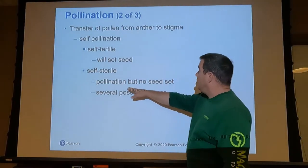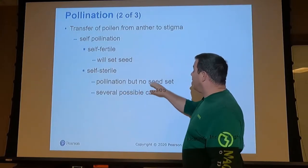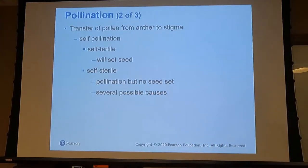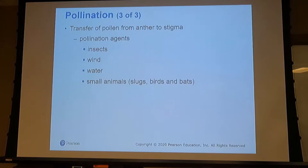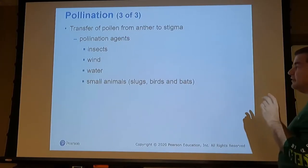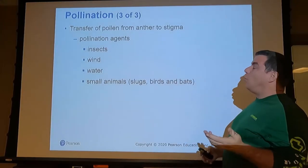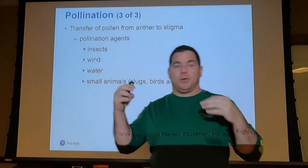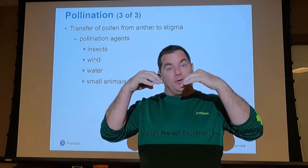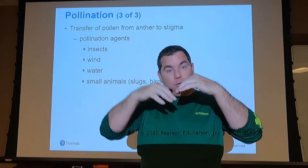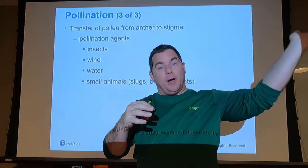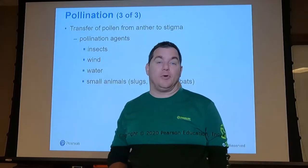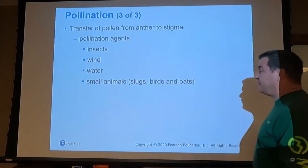Pollinating agents that help cross-pollination include bees, wind, and water. If two flowers are close together, rain can splash pollen from one flower onto a neighboring flower.